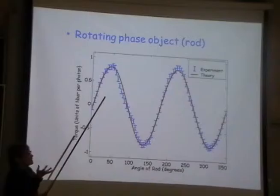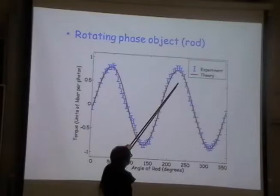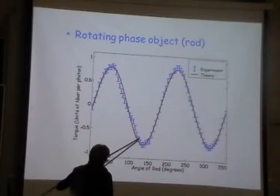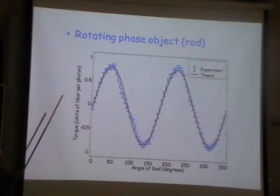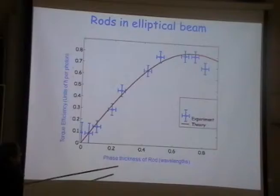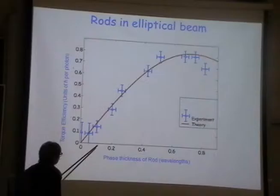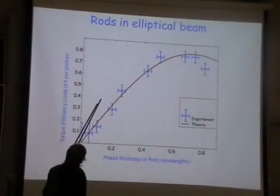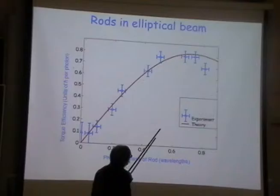Now I rotate the rod with LG02 illumination through a full 360 degrees. The blue points are my experimental results and the theory is in red. We can actually analyze the torque on the rotating phase object very precisely. Putting rods in a vertical beam, I can also look at torque efficiency versus phase thickness of the rod — how many wavelengths of phase thickness I have — and the torque efficiency has its maximum at a certain value.